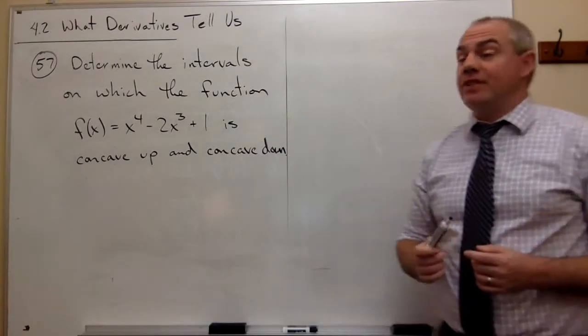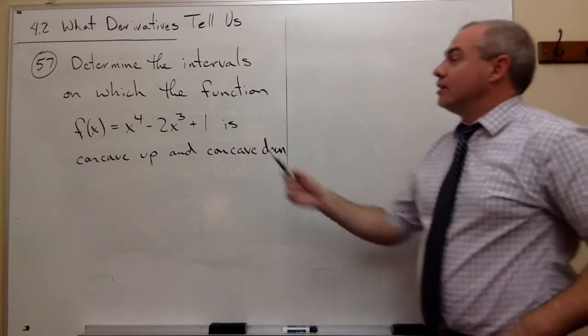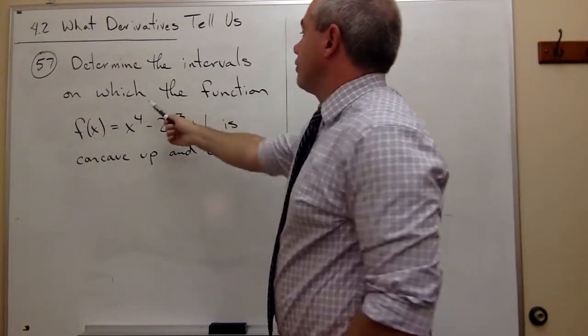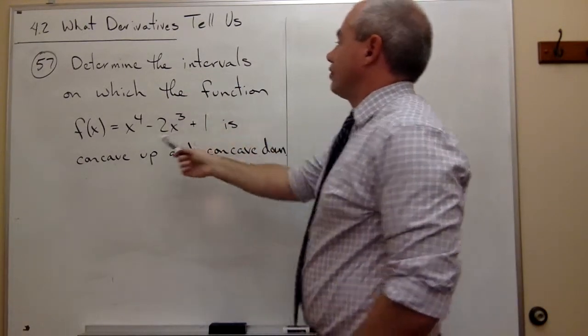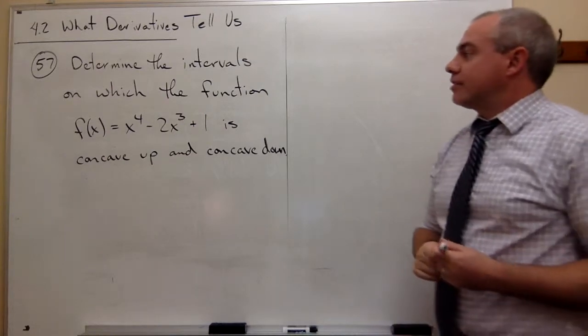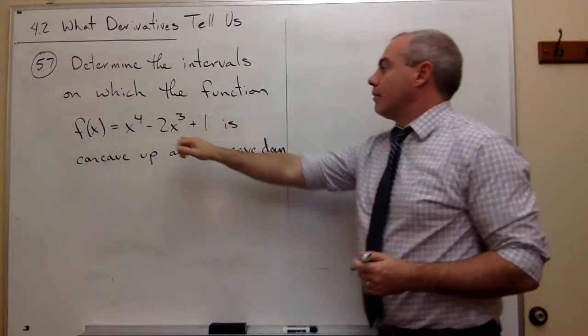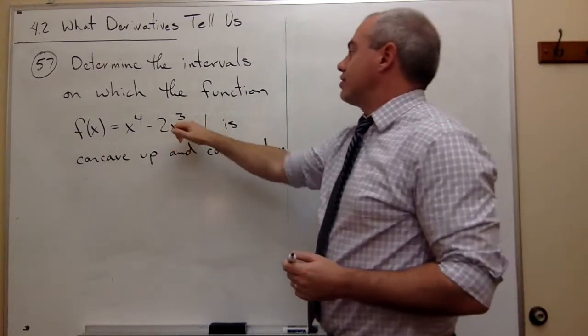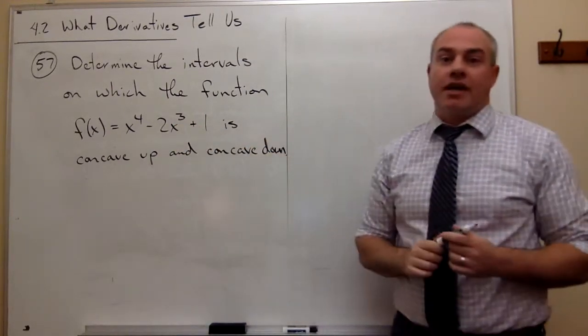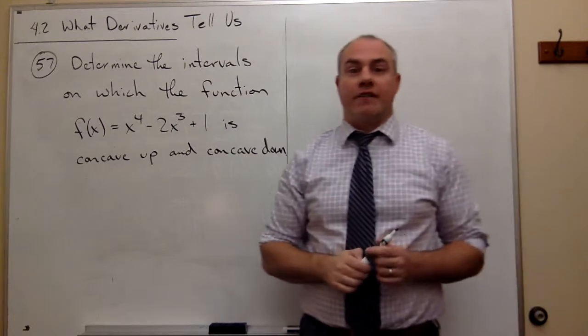In problem number 57, we'd like to determine the intervals on which the function f of x equals x to the fourth minus 2x cubed plus 1 is concave up and concave down.